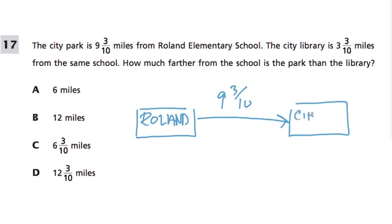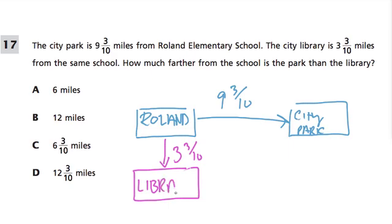It's Rowland to the city park. And then we're told the city library is 3 and 3 tenths miles from the same school. So we don't know what direction it's in. Maybe it goes down here. But it's only 3 and 3 tenths of a mile, and then we get to the library. And it makes sense that the library is close to the school. So the question is asking us, how much farther from the school is the park than the library?